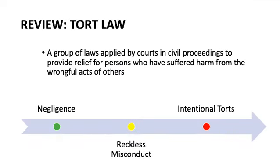Quick wrap-up of our tort law spectrum. This concept of tort law is basically an umbrella area of law covering issues where individuals have been harmed because of the wrongful acts of others. We now know there are three areas of tort law that fall on a spectrum based on intent to act and intent to harm on the part of the defendant. Make sure you understand the classification of each in terms of intent and what that means in the context of the court system — how these classifications impact the elements that have to be proven and the lens through which a judge might view these cases based on severity.